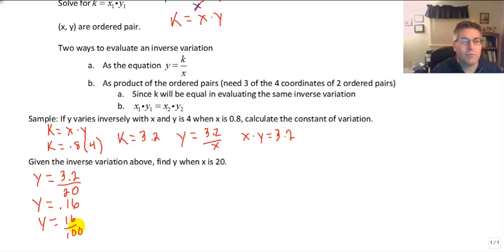If we wanted to reduce that, there's a multiple of 4 that we can simplify in 16 over 100. And that would be the fractional equivalent of 4 over 25. So we have the ordered pair here of 20 comma 4 over 25. And the other ordered pair when x is 0.8, y is 4.